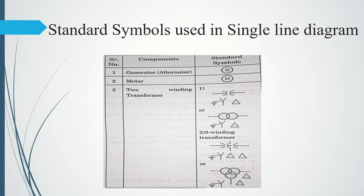Before diving into the single line diagram itself, there are a few things to discuss. Whenever we want to calculate parameters or do performance analysis of a transmission line, there are four important parameters: first is the series resistance of the transmission line, then series inductance, shunt capacitance, and conductance of the same line.